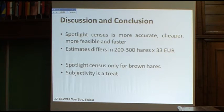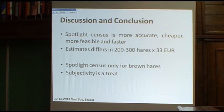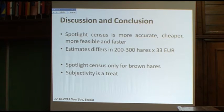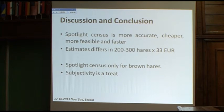In summary, the spotlight census method is more accurate, cheaper, more feasible, and faster than the traditional method. The driven census is known to underestimate populations — in this case by 200 to 300 hares for the whole hunting ground. If one hare is valued at 33 euros, that difference significantly affects the shooting bag definition. However, the spotlight census only estimates brown hares, while the traditional method estimates all game species, and observer subjectivity can be a concern.